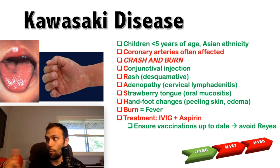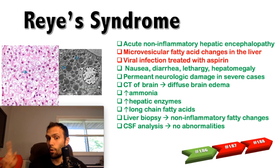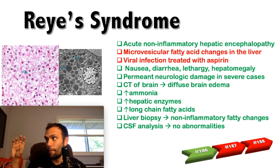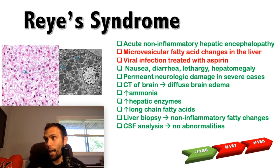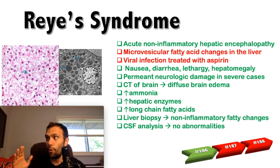Make sure vaccinations are up to date to avoid Reye syndrome. Reye syndrome is an acute non-inflammatory hepatic encephalopathy. Classically, this occurs when a child is treated with aspirin during a viral infection. The aspirin inhibits mitochondrial enzymes, which disrupts oxidative phosphorylation — the electron transport chain — and also inhibits the beta-oxidation of fatty acids.